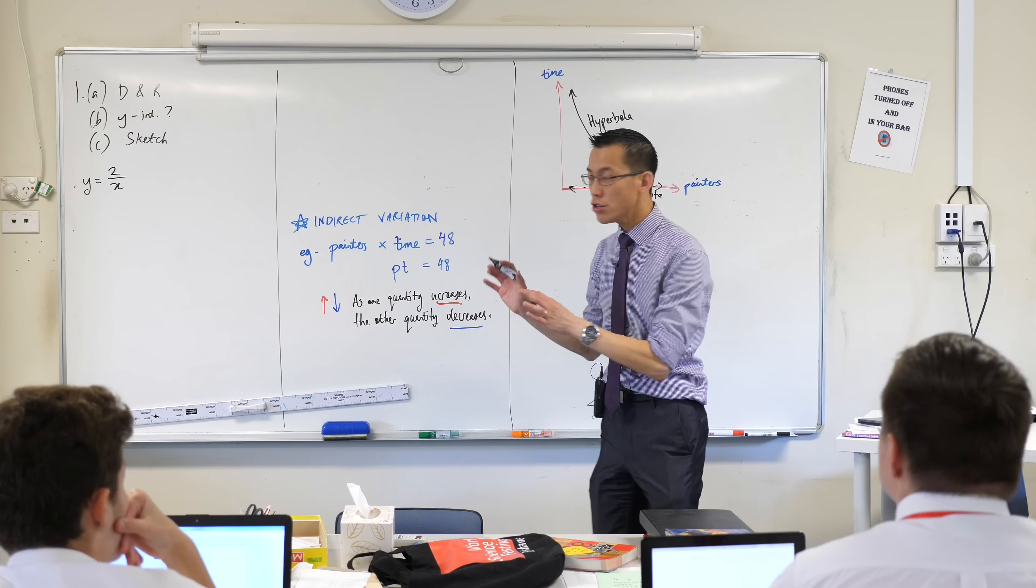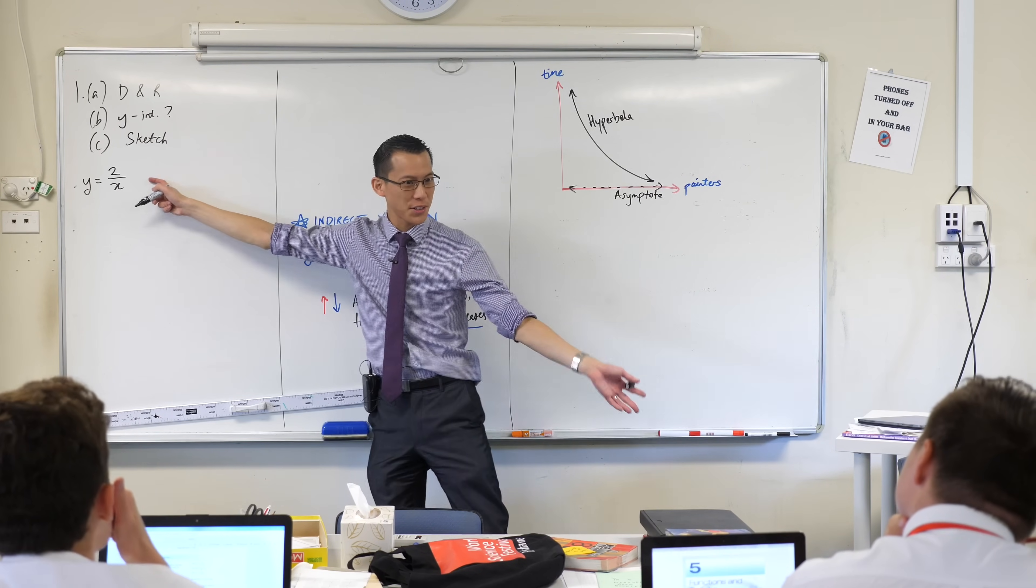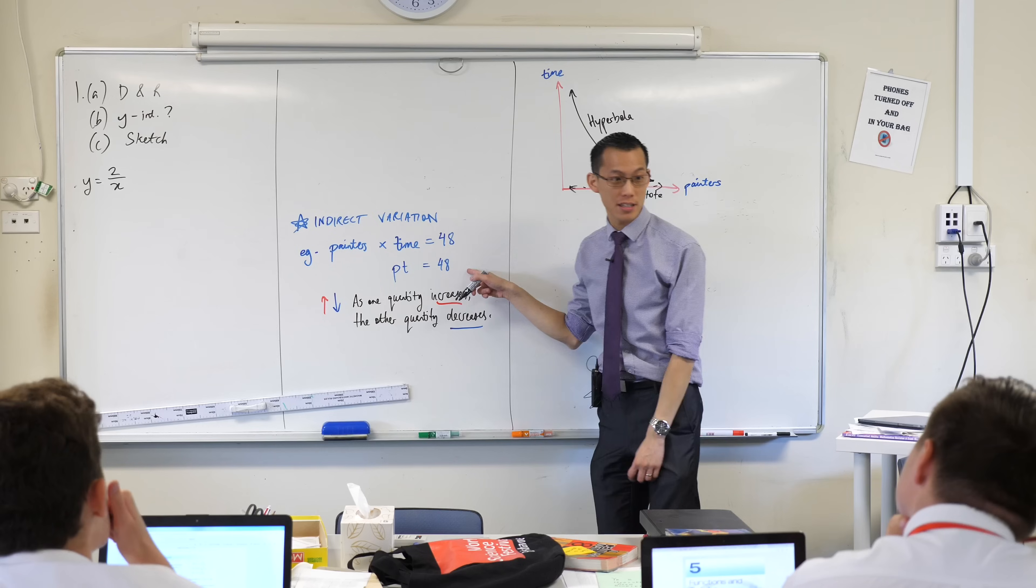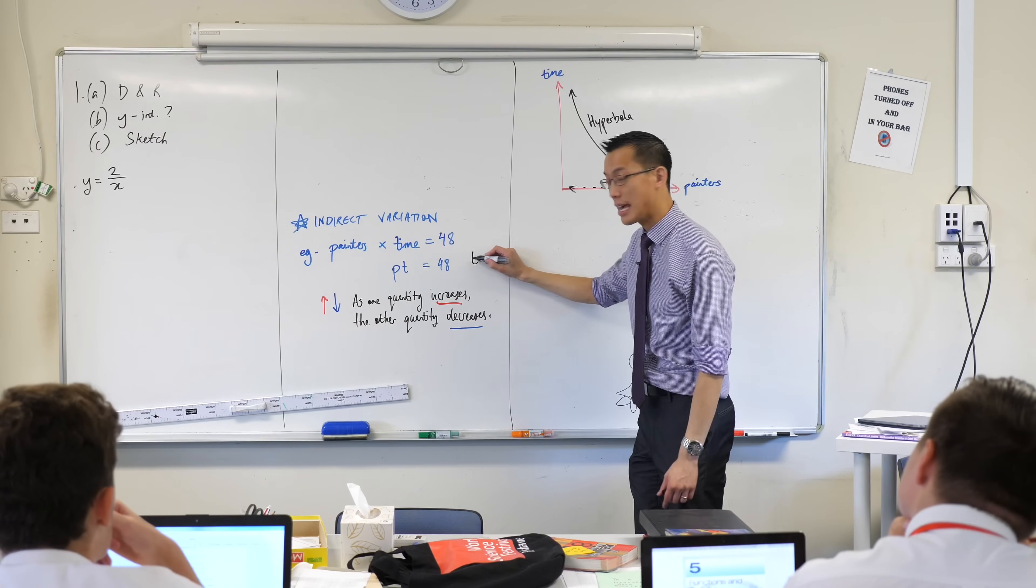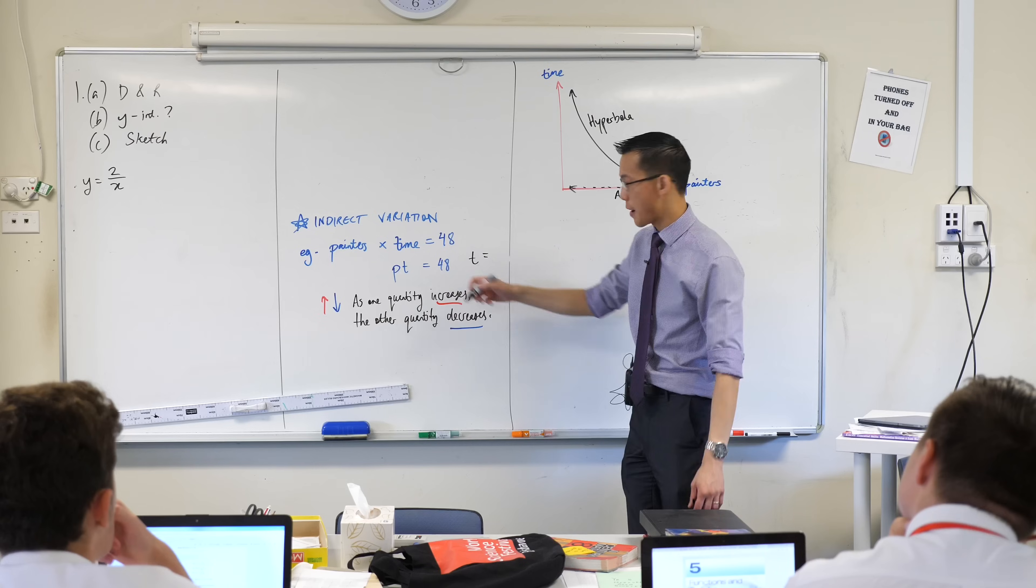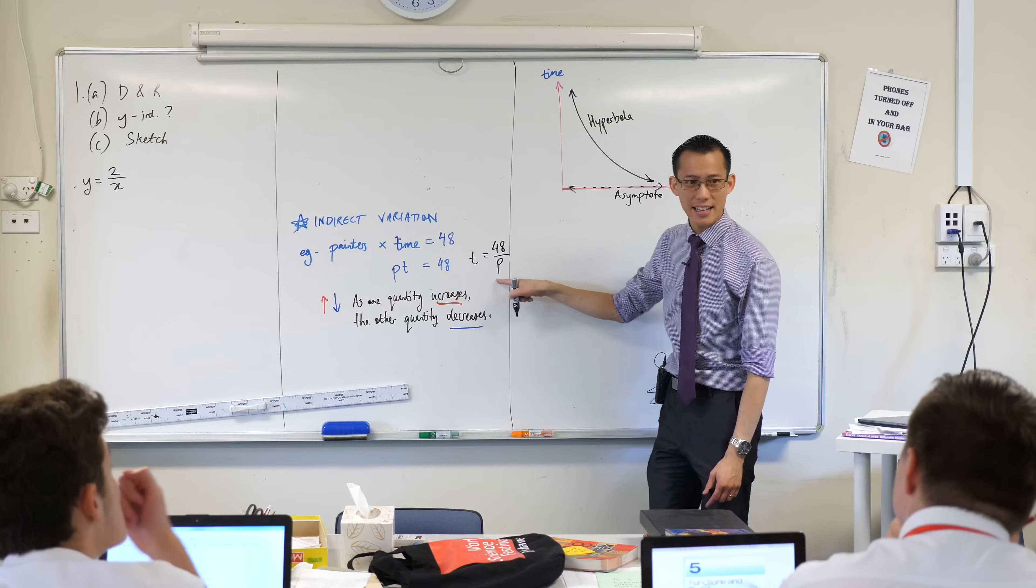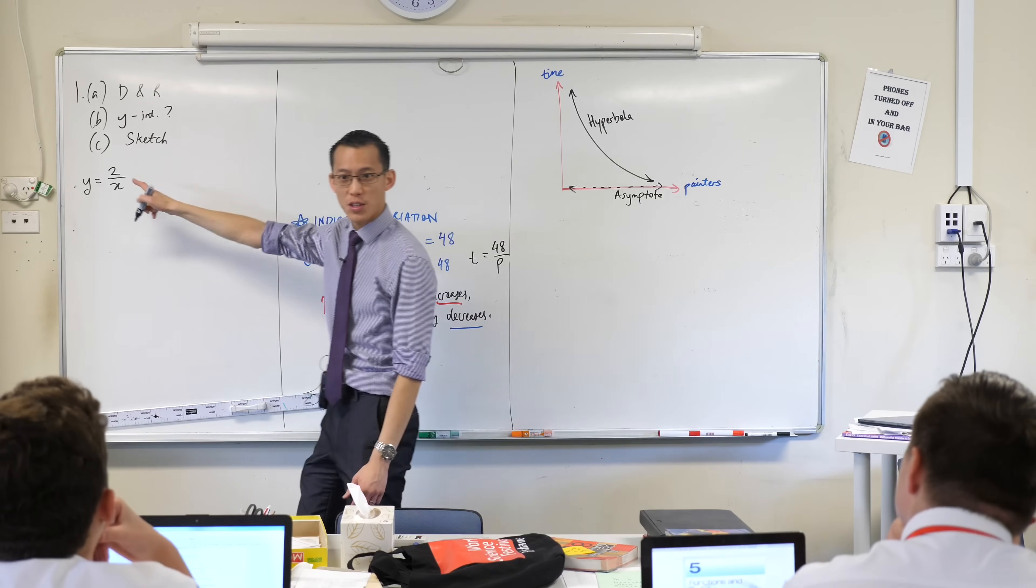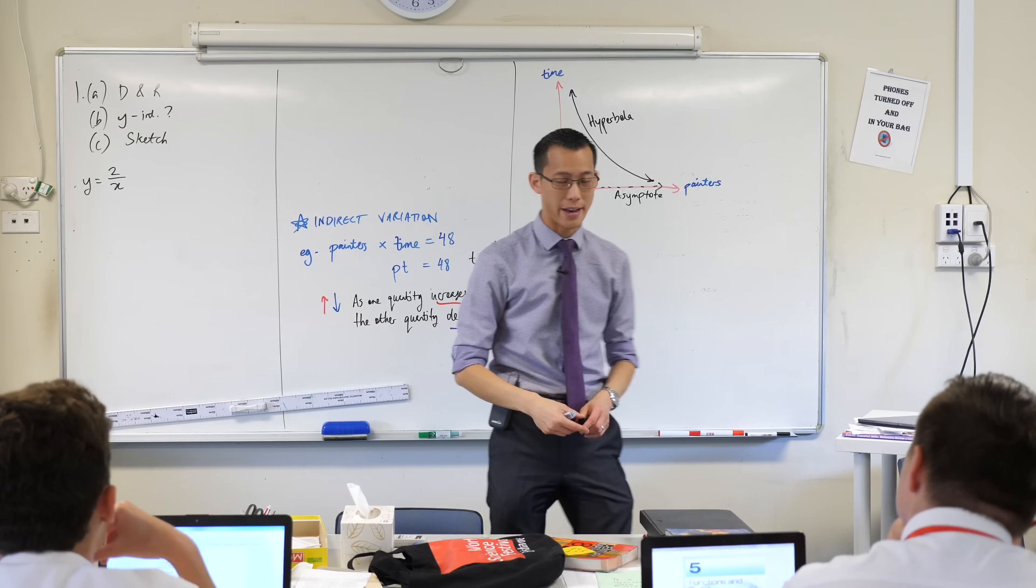Now just before we launch into this, do you notice that this is really, just dressed up in slightly different clothes, what we are looking at with painters and time. Do you notice I could rewrite this in this form. T, I could divide both sides through by P, by the number of painters. You get this. Do you see that? That's the Y, that's the X. Same deal here. So whenever you're seeing this thing with that X on the denominator, this is the shape you ought to expect.